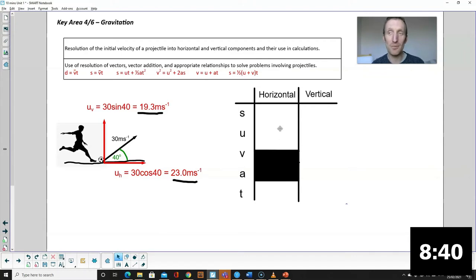Solving questions on projectiles using equations of motion, big part of unit one. First thing you do, if you have a velocity and angle, you're going to resolve it into the initial horizontal and vertical components. The component adjacent to the angle will use cos, the component opposite the angle will use sine. And it's those two initial components that you put into your SUVAT table. So you draw your SUVAT table, two columns, horizontal, vertical, think of them independently.